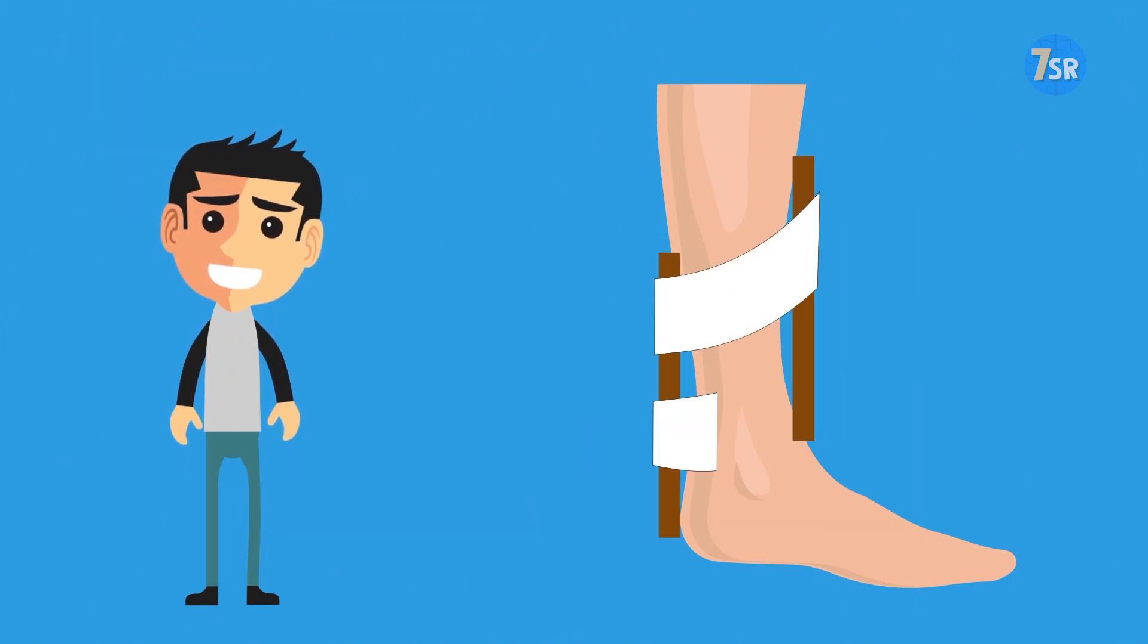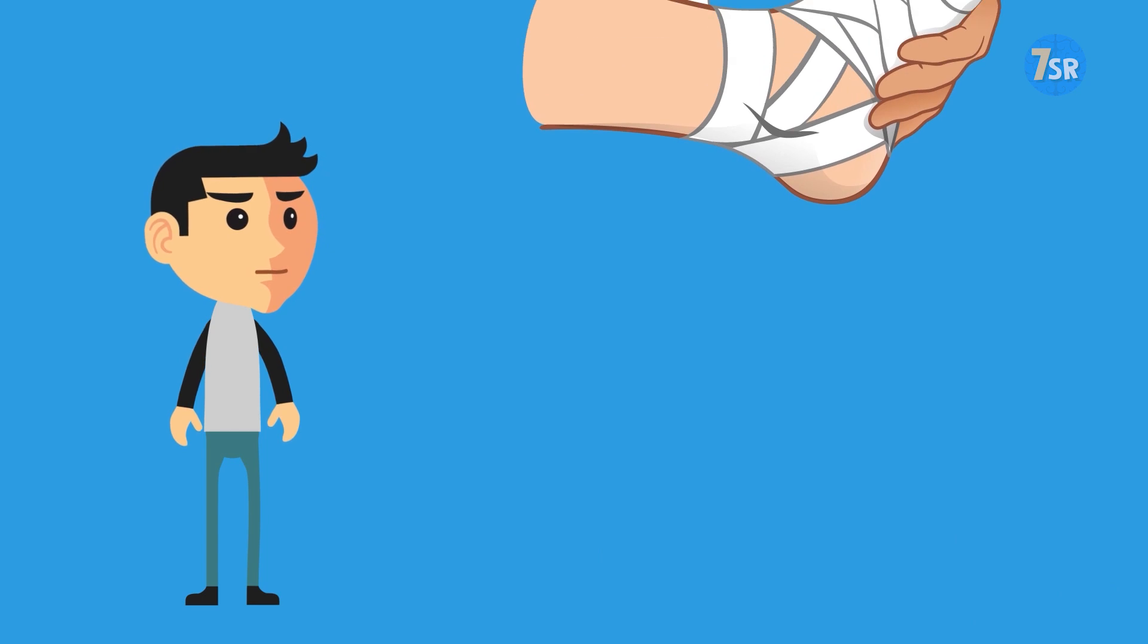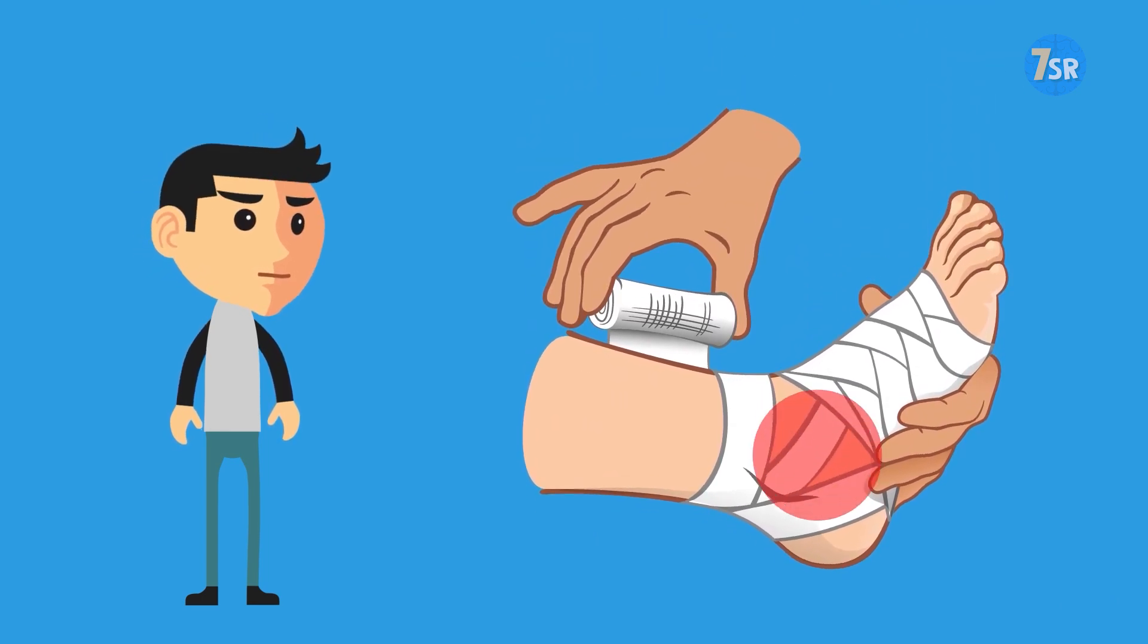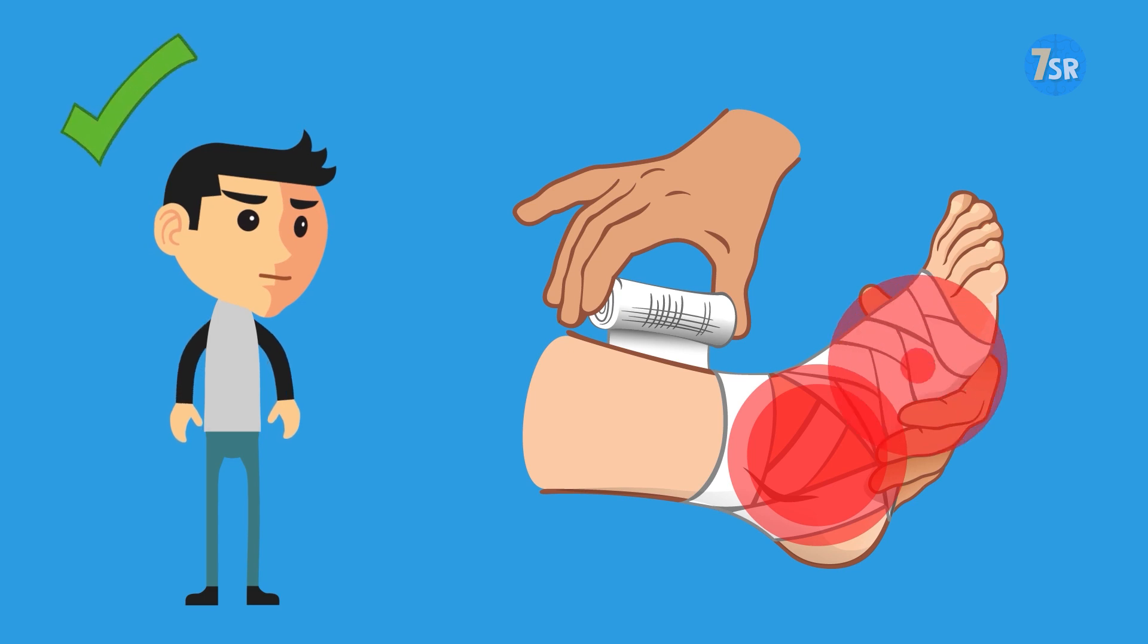The best course of action would be to immobilize the injured limb and go to the hospital as soon as possible. Bandage the limb in a comfortable position, immobilizing not only the place of possible fracture, but also the two closest joints as well.